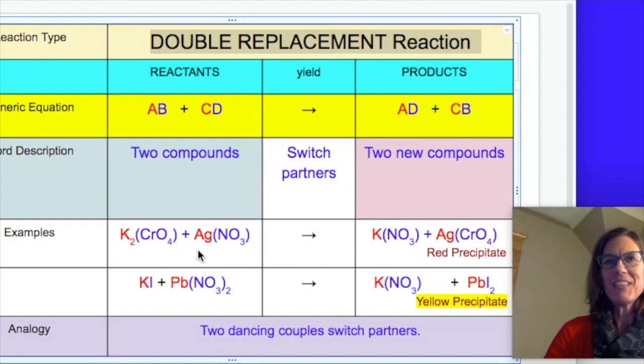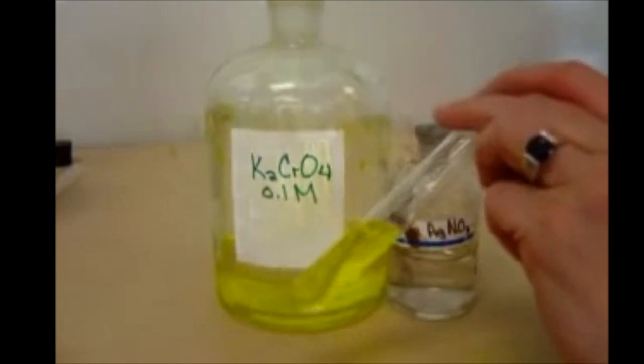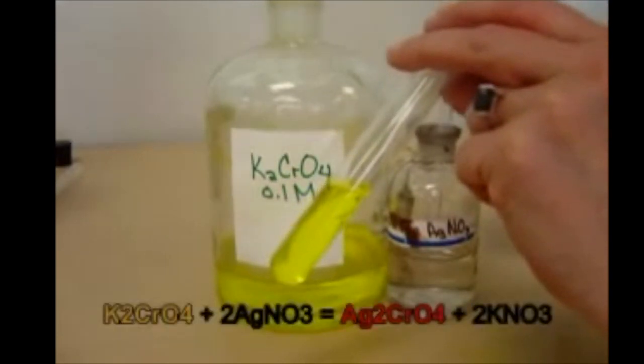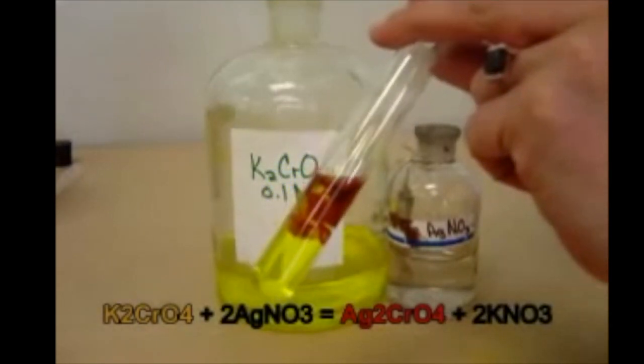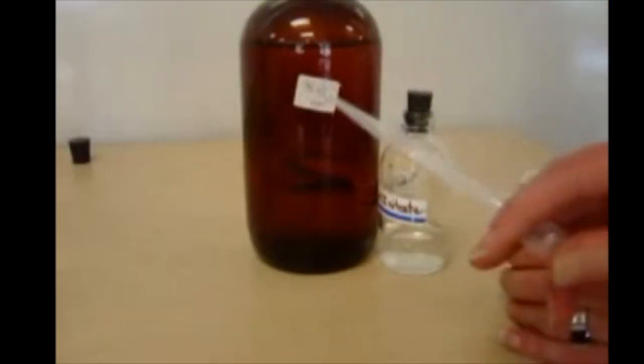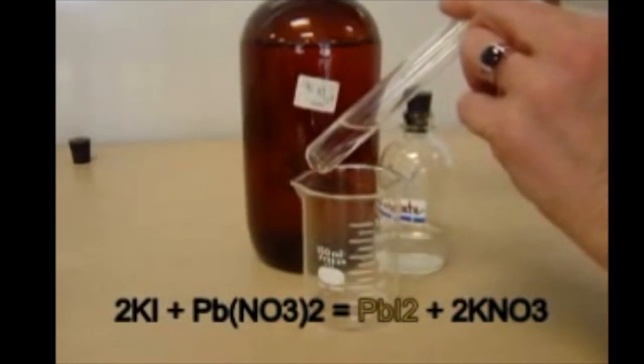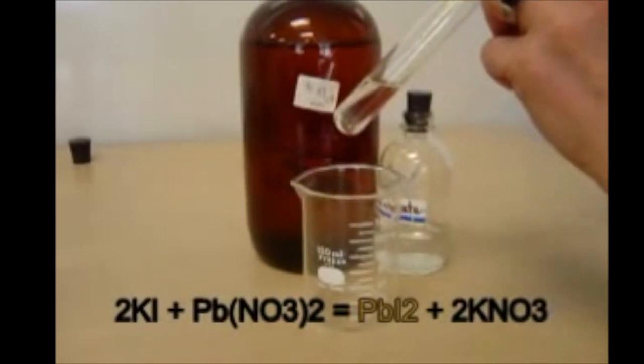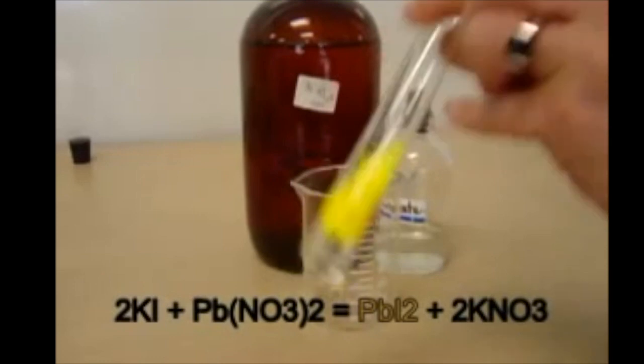So you're going to see these two reactions in the next video. We're going to do a double replacement reaction with potassium chromate and silver nitrate. Here's my potassium chromate. And I see that when I add silver nitrate to it, I am forming a nice red precipitate. And the precipitate is silver chromate. And we are going to mix potassium iodide and lead nitrate. So I've got my lead nitrate in here and I'm going to add some potassium iodide to it. And we're going to see right away that we get a precipitate of lead iodide. What a pretty precipitate.